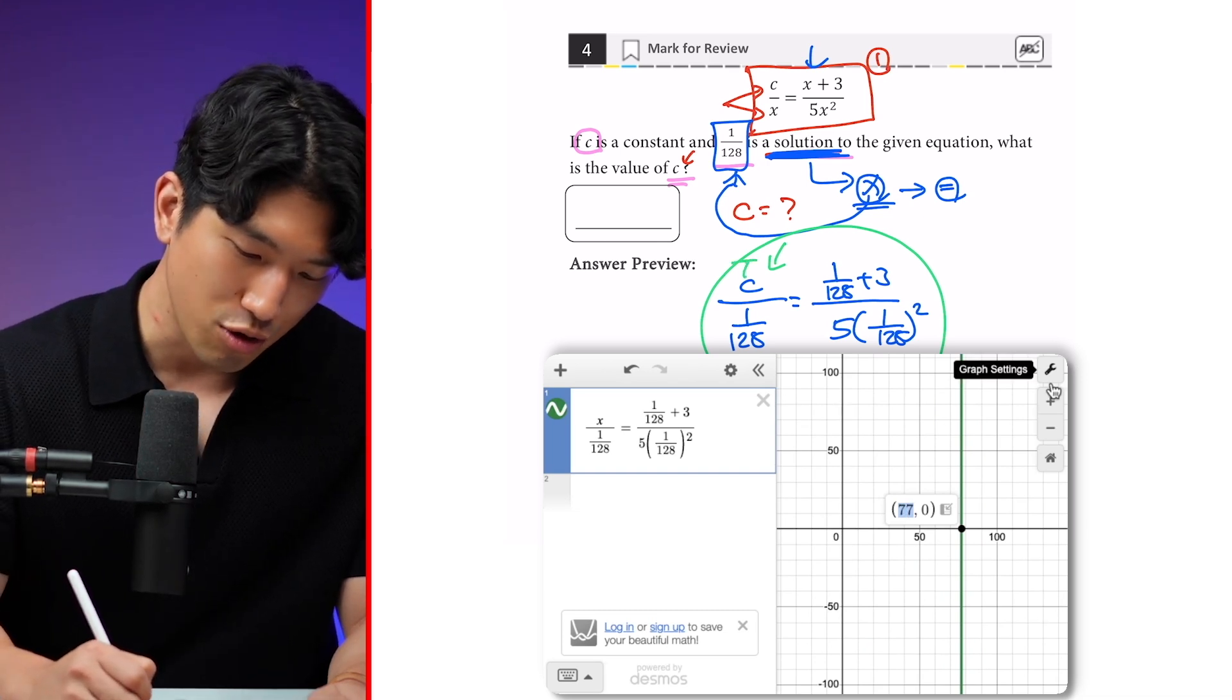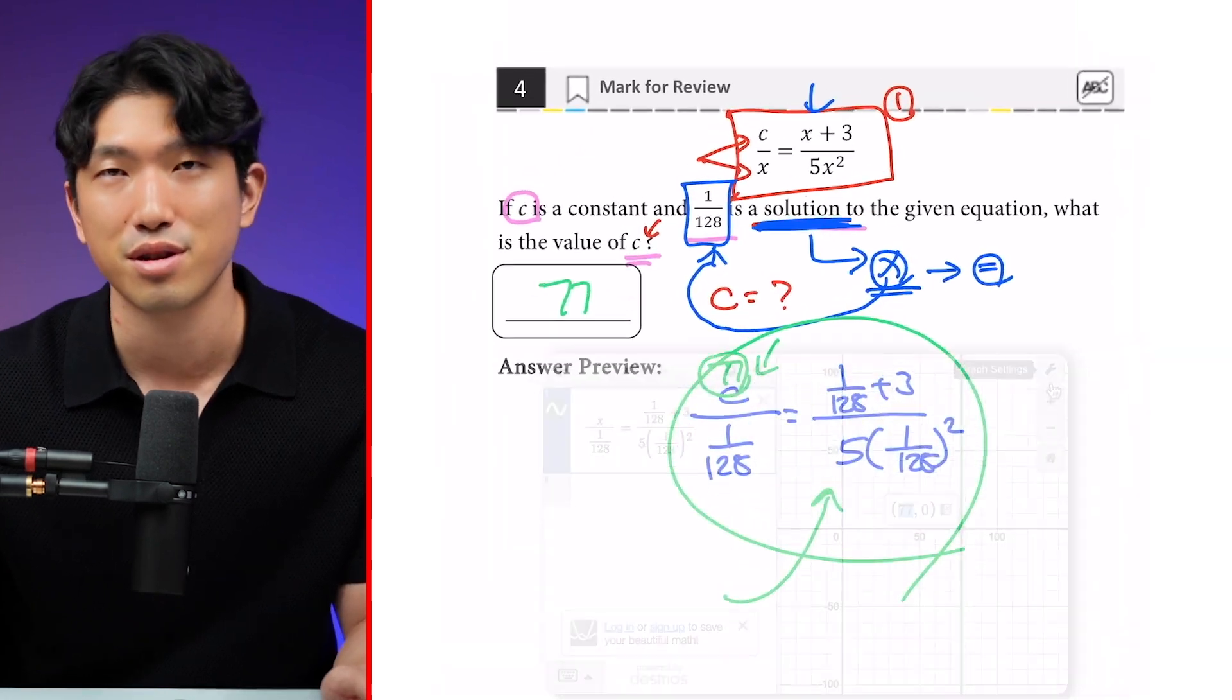So what's the value of c? Our c is going to be 77. That's going to be our final answer. Does that make sense?